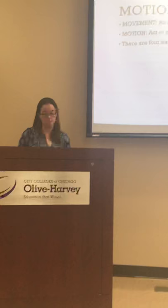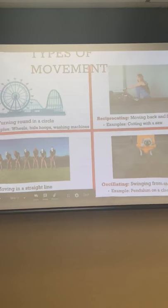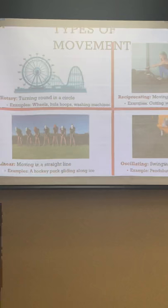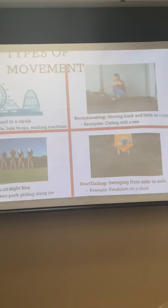Within that, there are four basic types of motion. The first is rotary — turning in a circle, like wheels, hula hoops, or washing machines. The second is reciprocating — moving back and forth in a straight line, such as cutting with a saw.